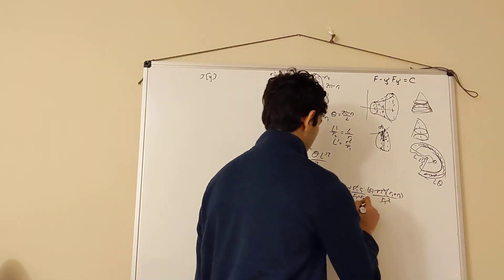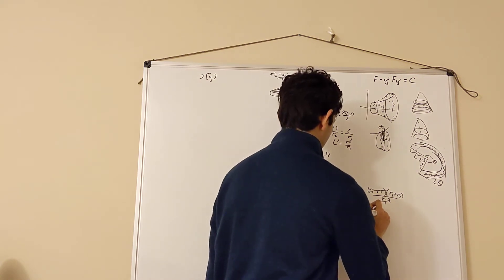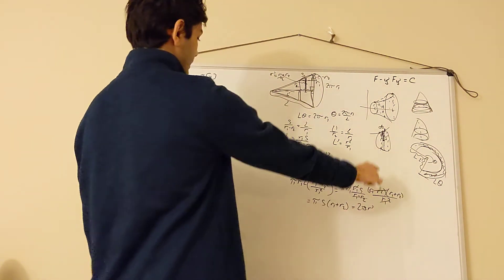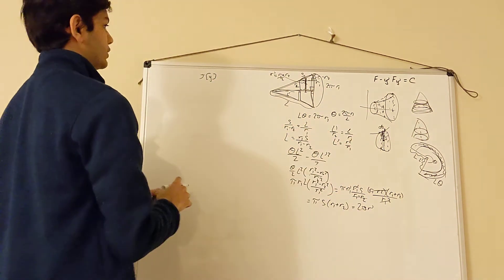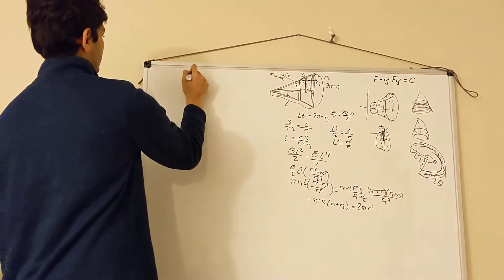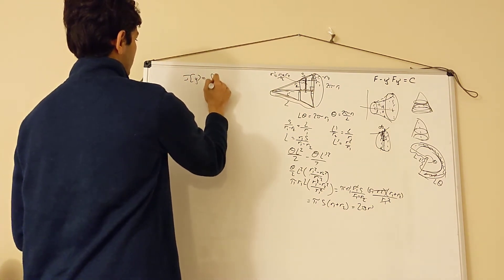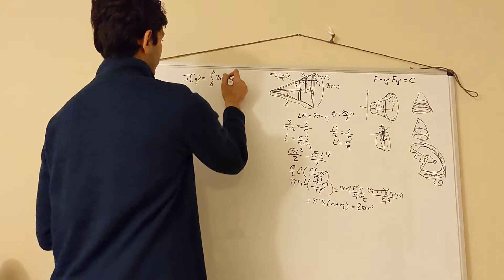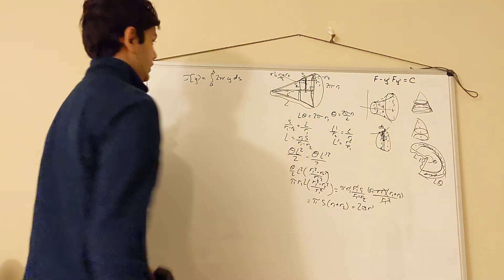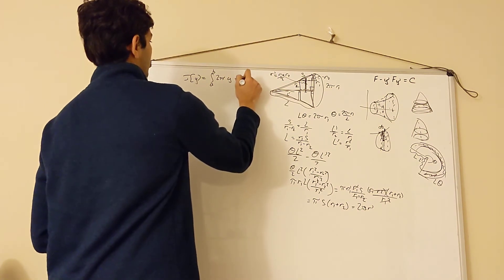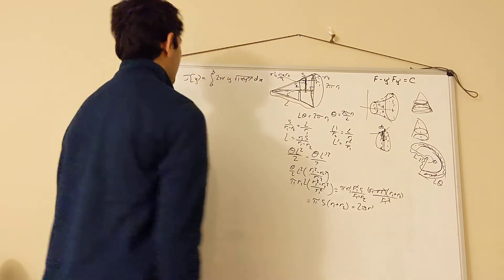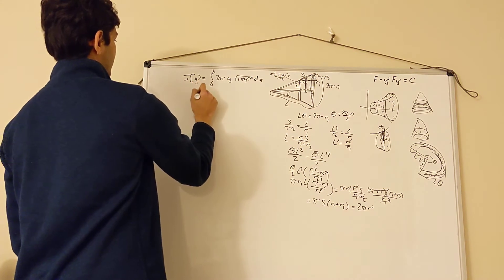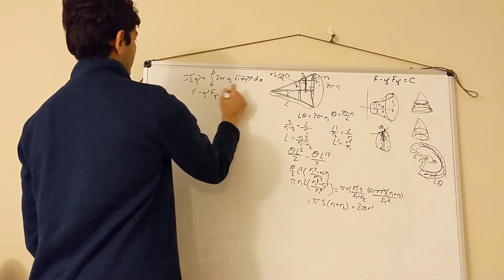Now we replace s with ds and r' with y, then integrate. So our functional is J[y] = ∫ from a to b of 2π·y·ds. Since ds = √(1 + y'²)·dx, we have J[y] = ∫ 2π·y·√(1 + y'²) dx. We can now apply the Beltrami identity, since our integrand is a function of y and y' only, with no explicit dependence on x.